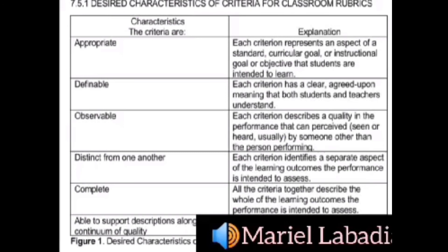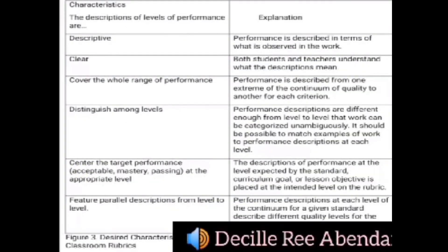As seen in Figure 1, the desired characteristics of criteria for classroom rubrics include: appropriate, definable, observable, distinct from one another, complete, and able to support descriptions along a continuum of quality. For example, 'appropriate' means each criterion represents an aspect of a standard curricular goal or instructional objective that students are intended to learn. Figure 2 shows the desired characteristics of descriptions of levels of performance: descriptive, clear, covering the whole range of performance, distinguishing among levels, setting a center target, and featuring parallel descriptions from level to level.